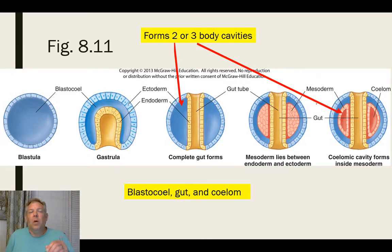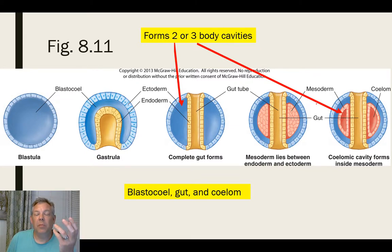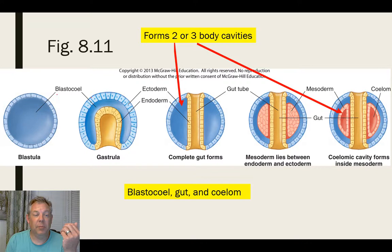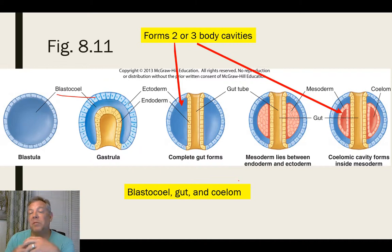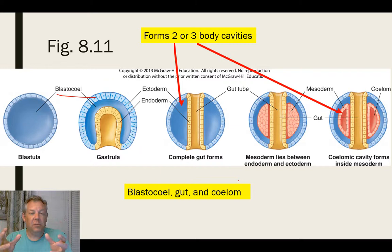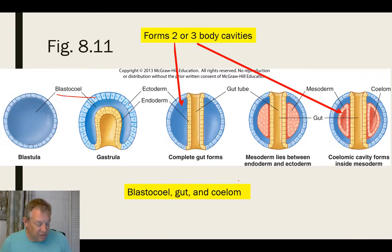When you have gastrulation, you can form some new cavities in the developing embryo. You started with one cavity — the blastocoel — and now you can end up with two or even three cavities. Some organisms only form two; some form three. How those cavities are formed is important. These are the details of embryological development that we use to infer relationships among these organisms.